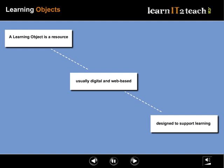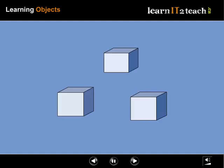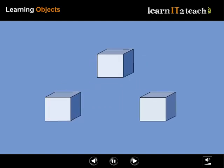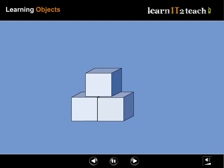In learning objects, educational content is broken down into small chunks that can be used and reused in various learning environments. In order for a chunk of content to be a learning object, it must be instructional and it must have intended learning outcomes.